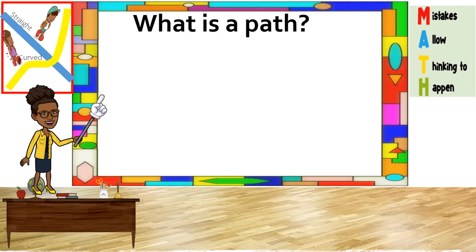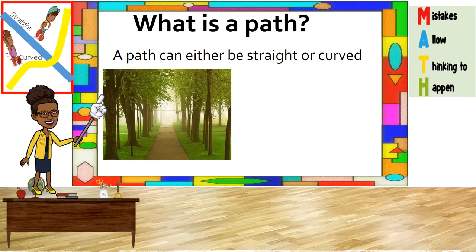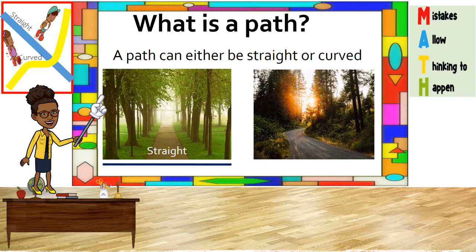Do you know what a path is? A path is a direction of travel or movement. A path is either straight or curved. We see many paths in our communities. We travel on a path from our homes to the shop or to school. Can you think of other places that you traveled on paths?